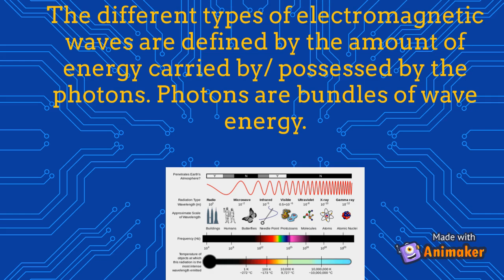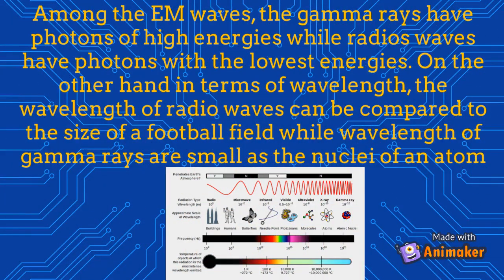The different types of electromagnetic waves are defined by the amount of energy carried by the photons — photons are bundles of wave energy. Among the EM waves, gamma rays have photons of high energies, while radio waves have photons with the lowest energies. In terms of wavelength, the wavelength of radio waves can be compared to the size of a football field, while wavelengths of gamma rays are as small as the nuclei of an atom.